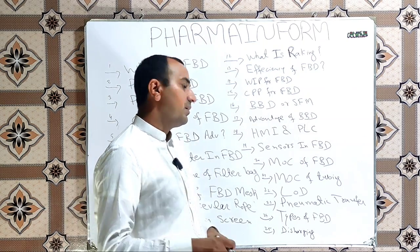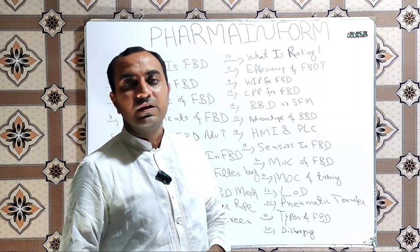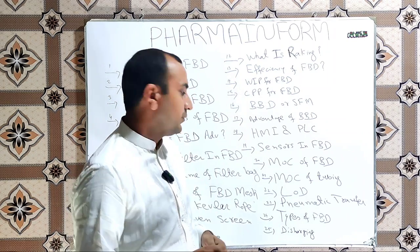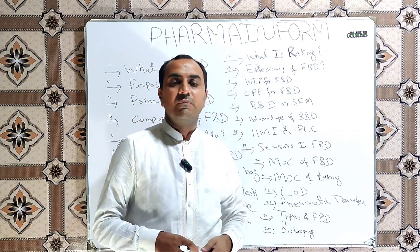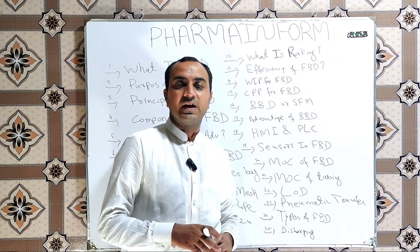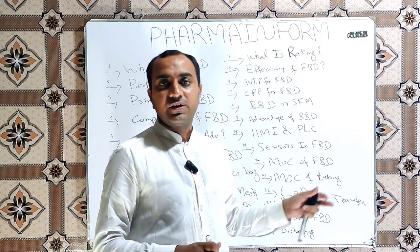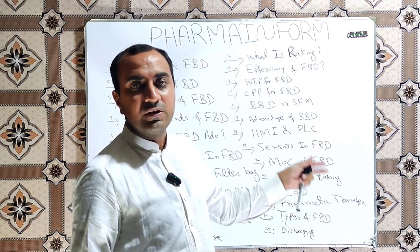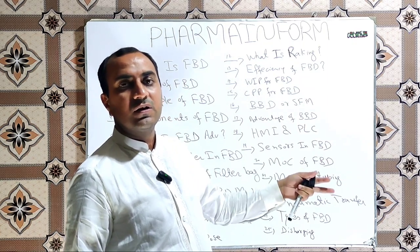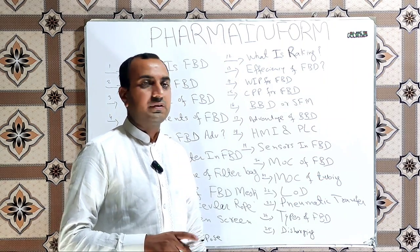Next one is how we discharge product from FBD. In conventional dryers we discharge by using manual method and in advanced FBDs, discharging is also by the pneumatic system and it is directly supplied to the co-mill for the sieving.